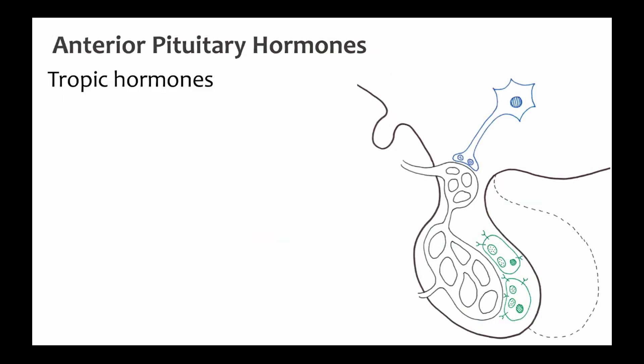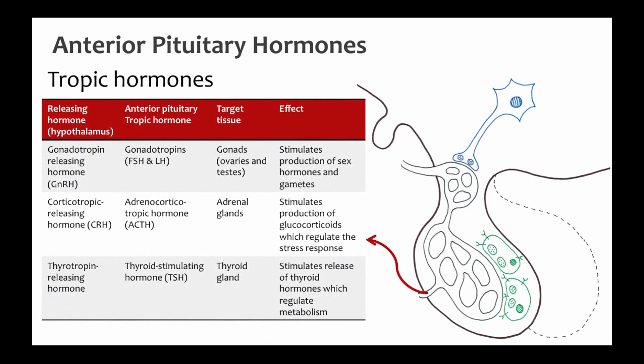The anterior pituitary, on the other hand, produces its own hormones, and these are released in response to signals from the hypothalamus. Some of the hormones produced by the anterior pituitary in response to hypothalamus signals are what we call tropic hormones. The target cells of tropic hormones are endocrine cells. Anterior pituitary hormones include the gonadotropins LH and FSH, that regulate reproduction, and adrenocorticotropic hormone, that regulates stress hormones.